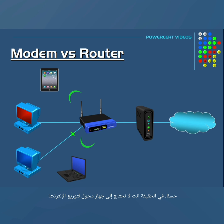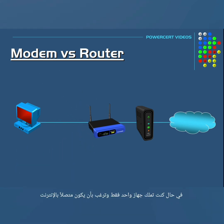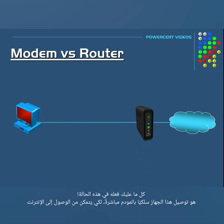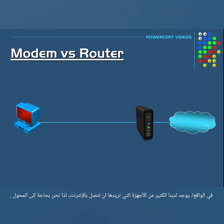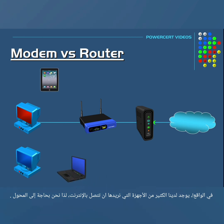Now technically you really don't need a router if you only want one of your devices to access the internet. You can just plug that device's network cable directly into the modem and then you'll be able to access the internet. However, like most homes and businesses, you're going to have multiple devices that need access to the internet, and that's where you would need a router.